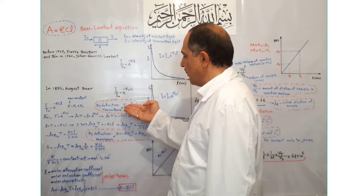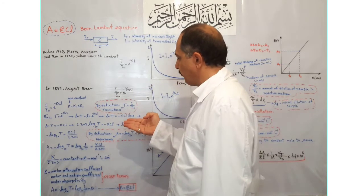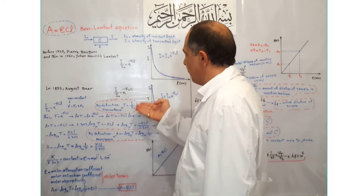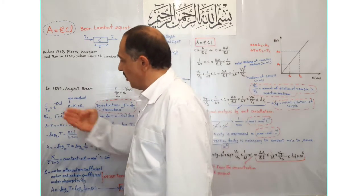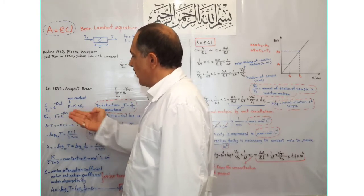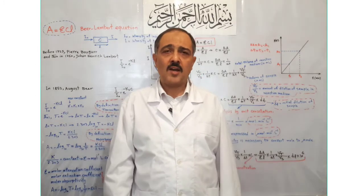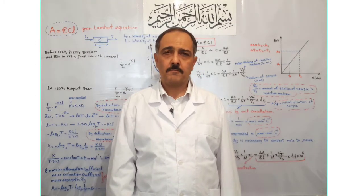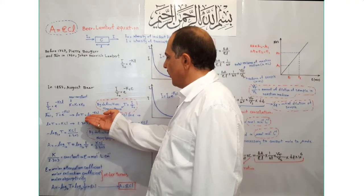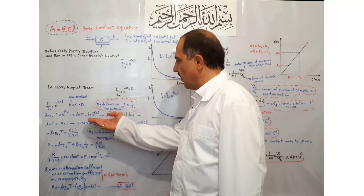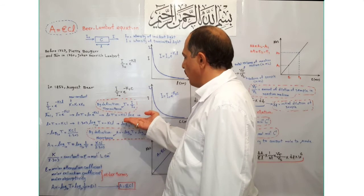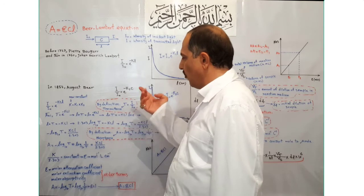By definition, transmittance T equals I/I₀, or the ratio of the intensity of transmitted light to the intensity of incident light. Replacing I/I₀ by T gives transmittance = e^(−KCL). Taking the natural logarithm of both sides gives: ln(T) = ln(e^(−KCL)). Solving the right side gives ln(T) = −KCL × ln(e). Since the natural logarithm of e equals 1, we have ln(T) = −KCL.